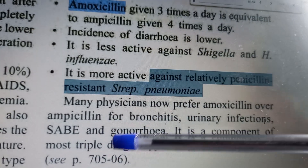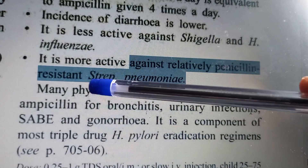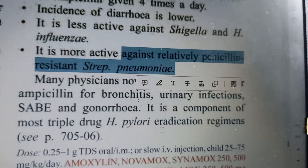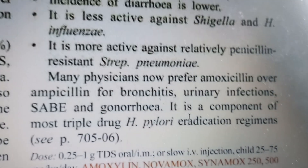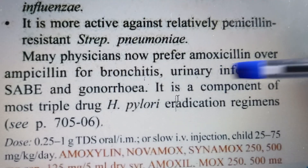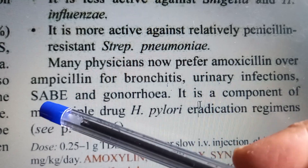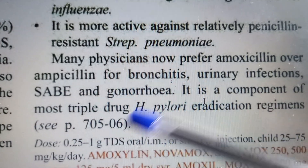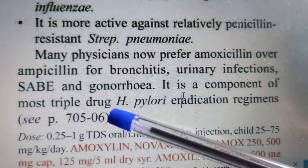Amoxicillin is completely absorbed and causes less diarrhea, which is a benefit. It is also active against penicillin-resistant Streptococcus pneumoniae, which is why most physicians prefer it. It is used for bronchitis, urinary tract infections, and — if the organism is susceptible — bacterial endocarditis and gonorrhea, which is a sexually transmitted disease.